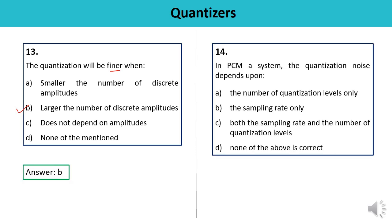Question 14: In a PCM system, quantization noise depends upon — number of quantization levels only, sampling rate only, both sampling rate and number of quantization levels, or none? In a PCM system, quantization noise depends upon two things: sampling rate and number of quantization levels. The answer is C.